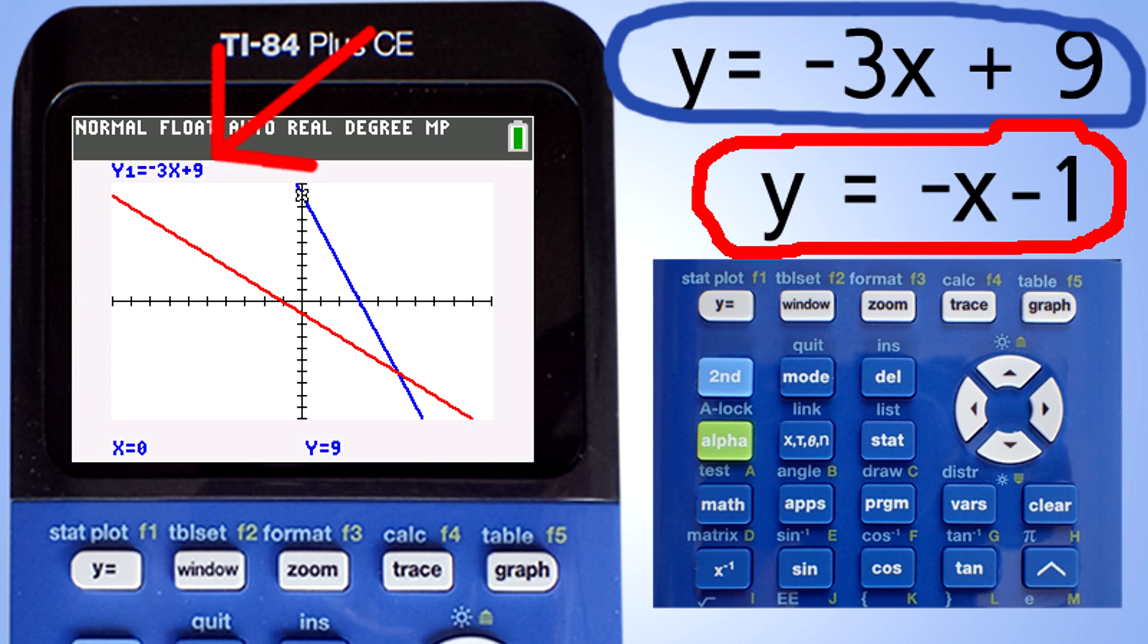We can move that trace mark to the red line by pressing the down arrow button here. When you press the down arrow, this window appears with the trace mark on the red line. You can jump back and forth between the lines by using the up and down arrows.